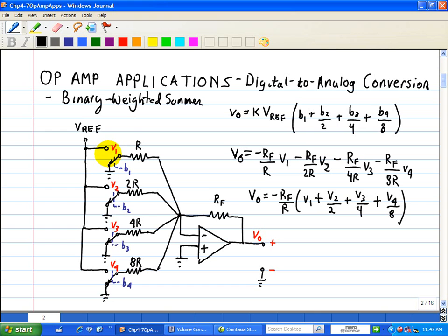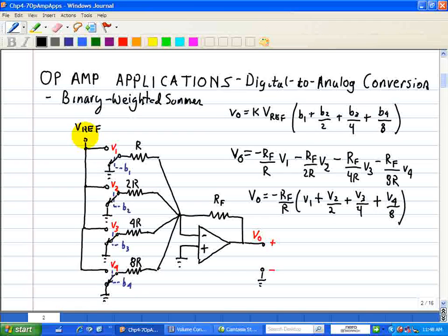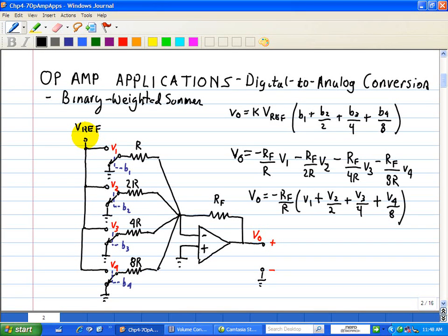So, in other words, an input voltage is zero when the control bit is zero, and equal to V reference when the control bit is one. So, in effect, the input voltages are related to the input bits as VK equals to BK times V reference, where BK is either a one or a zero.